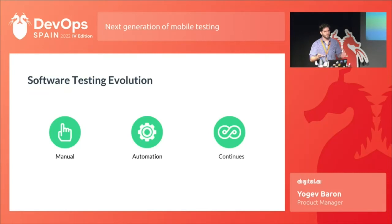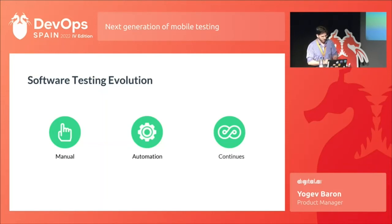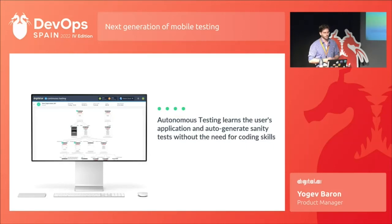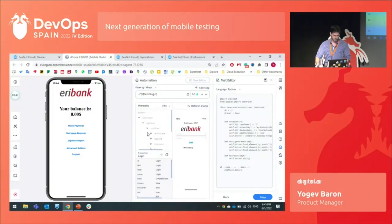And now we are arriving at a new era — an era where tests can be created automatically, where humans are much less involved using machine learning and AI. Right now, I want to present our autonomous testing tool. Autonomous testing will scan the user application and auto-generate sanity tests without any need for coding skills. I want to show you how this platform looks like.